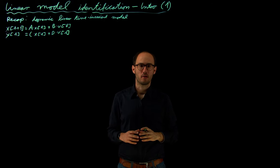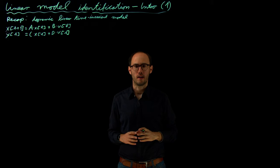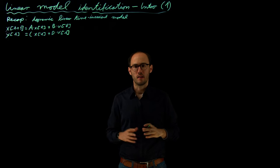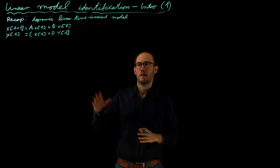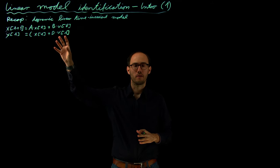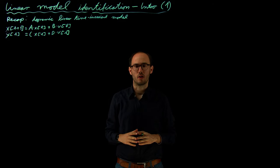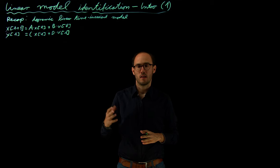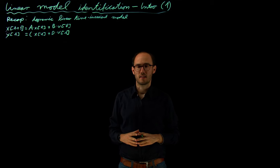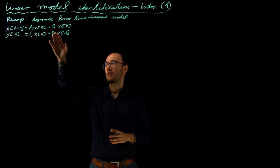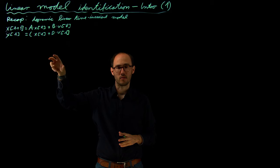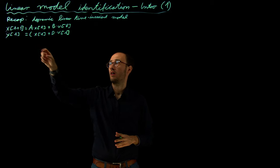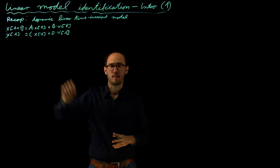Welcome to this lecture series on linear model identification. In the previous lecture series on dynamic system representations and modeling, we have come up with the discrete time state-space representation of a linear system, as we can see here on the left-hand side. In this lecture series, we are going to discuss how we can identify the parameters inside the A, B, and C matrices by observing the inputs U, the states X, and the outputs Y.